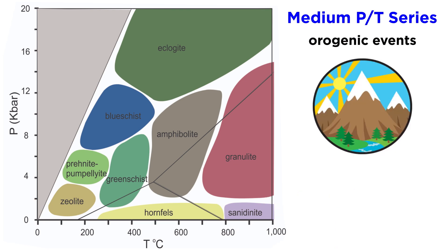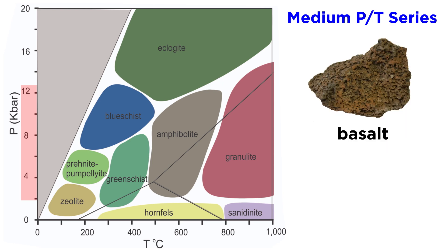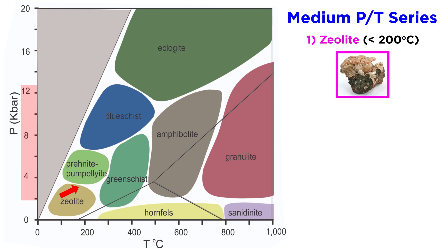The medium-PT series encompasses orogenic, or mountain-building events, where the intense heat and pressure associated with colliding continents metamorphoses the rock near the collision. Medium-PT metamorphism generally occurs at pressures between about 2 and 12 kilobars. Let's now consider the progressive orogenic metamorphism of a basalt, and like before, we start in the zeolite facies.